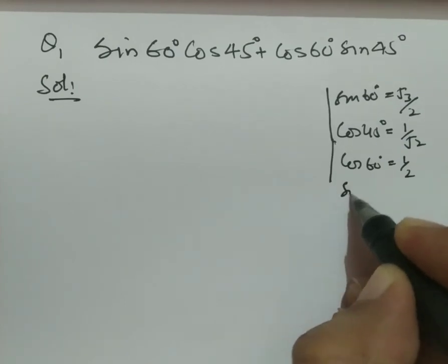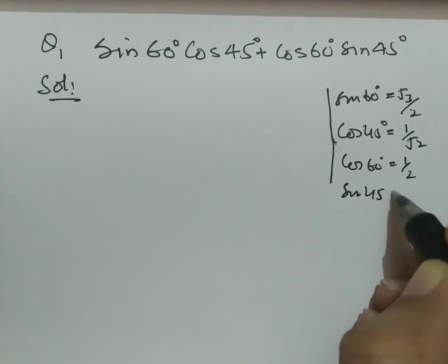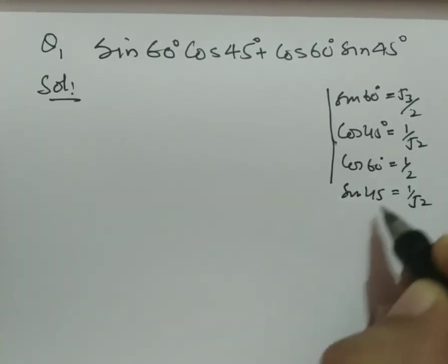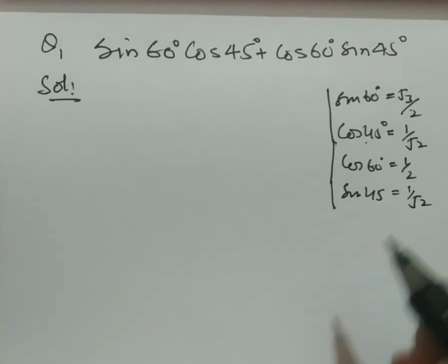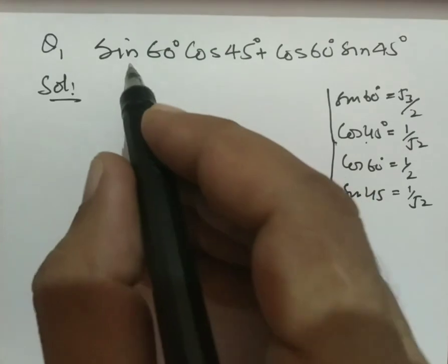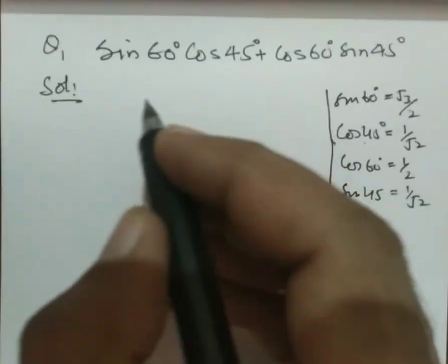And sin 45 is also 1 over root 2. Cos 45 and sin 45 are always the same. So now substitute these values in place of the ratios.